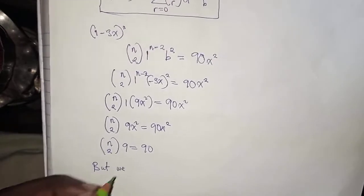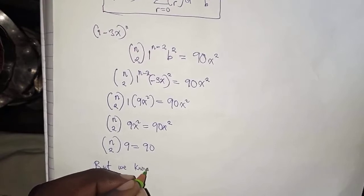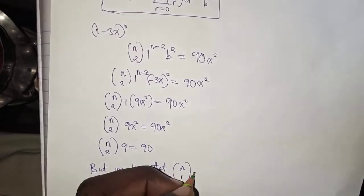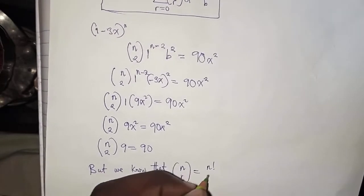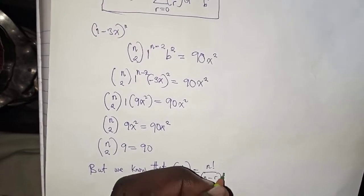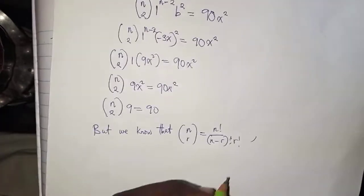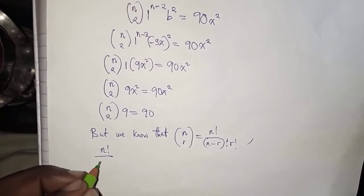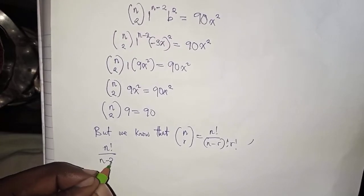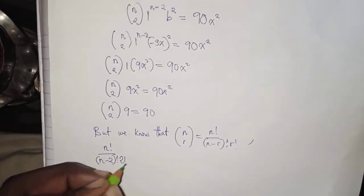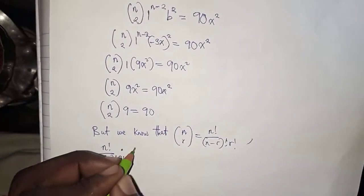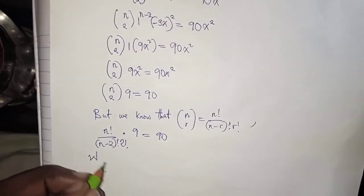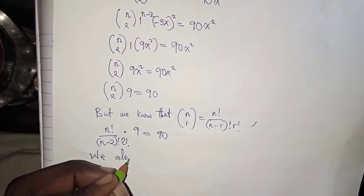From the law of combinations, we know that n choose r is simply equal to n factorial over (n minus r) factorial times r factorial. So the substitution for n choose 2 will be n factorial over (n minus 2) factorial times 2 factorial, multiplied by 9, which is equal to 90.